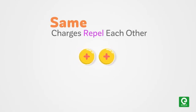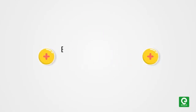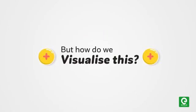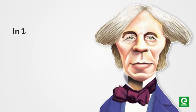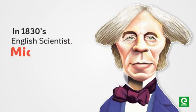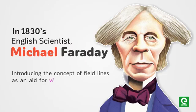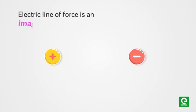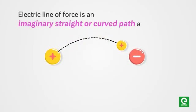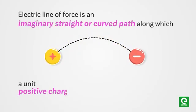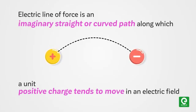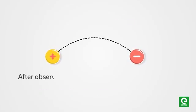In the 1830s, English scientist Michael Faraday answered this problem by introducing the concept of field lines as an aid for visualizing electric and magnetic fields. An electric line of force is an imaginary straight or curved path along which a unit positive charge tends to move in an electric field.